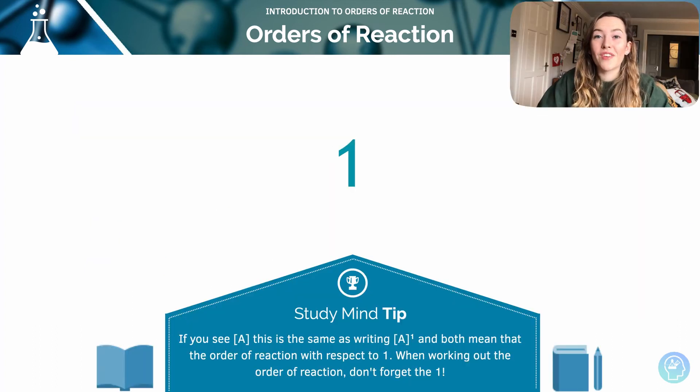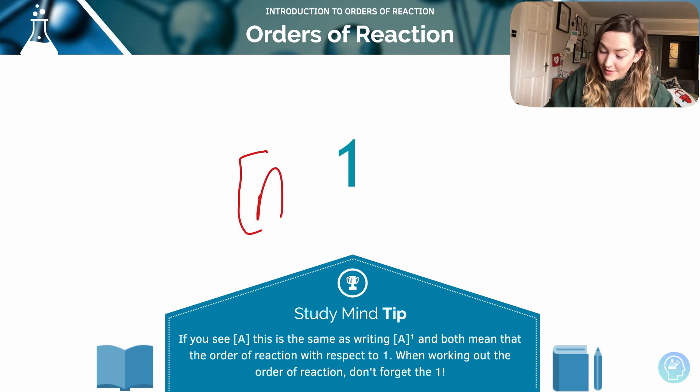You saw in the previous example that we have the concentration of A raised to effectively what we could see as nothing. This is the same as writing A to the power of 1. So we say it's first order. When working out the overall order of a reaction, don't forget the 1.